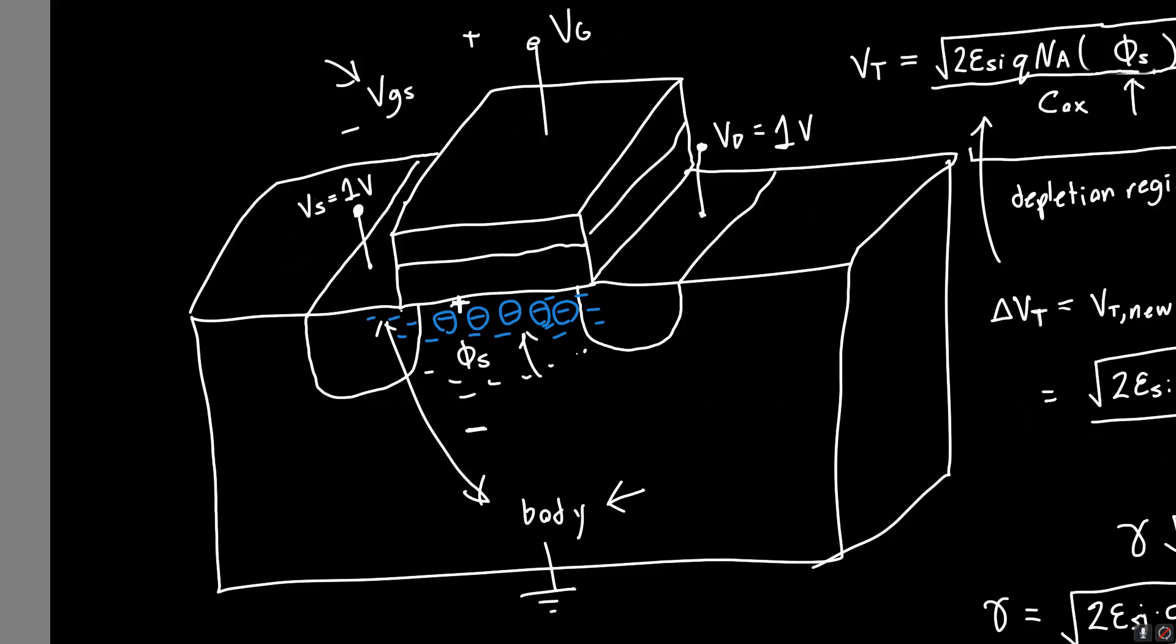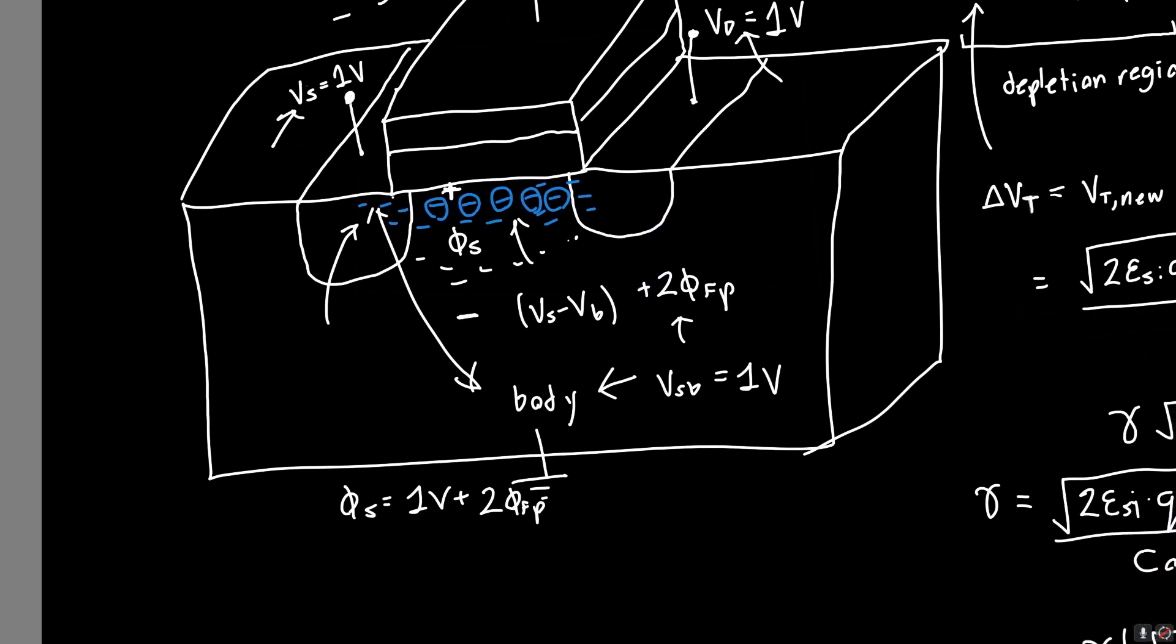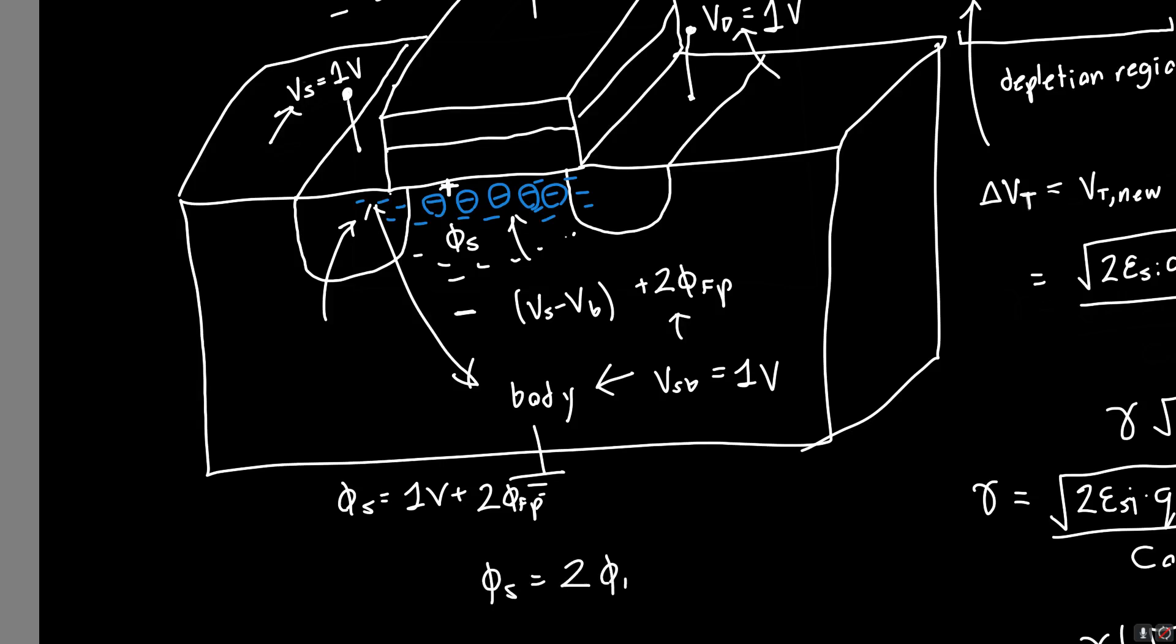If we're talking about the edge where all these electrons are, that's just going to be the potential that we're applying, Vs or Vd, plus the initial potential that we had already built into the system. It's going to be Vs minus Vb plus that initial potential, or we can just write this as Vsb. So psi_S would be 2 phi_FP plus Vsb.